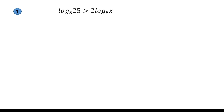We have the given: logarithm of 25 with base 5 is greater than 2·logarithm of x with base 5. First, apply the logarithm power rule on the right side. So instead of 2·log₅(x), it becomes log₅(x²).